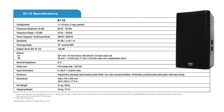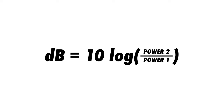So if one watt of power will provide us with 97 dB SPL at one meter, what sound pressure level can we expect with more power supplied from the amplifier? This question can be solved using this decibel formula.